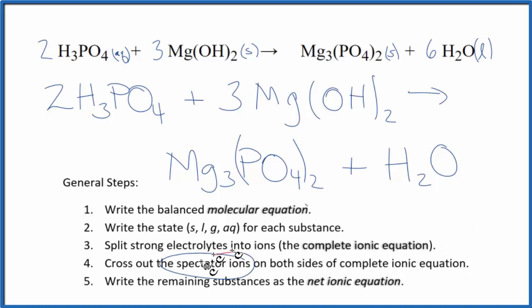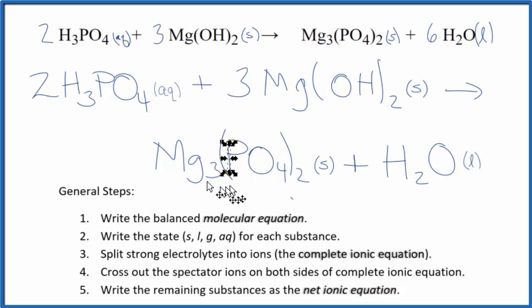Next, we would cross out spectator ions that appear on both sides. But, there actually aren't any here. All of these are together. There's no ions, so we can't cross anything out. That makes this the net ionic equation as well. I'll clean it up and write the states in, and we'll have a net ionic equation for H3PO4 plus Mg(OH)2.